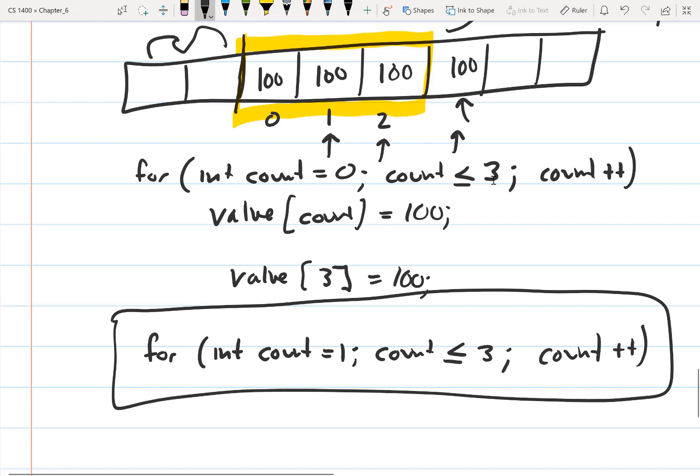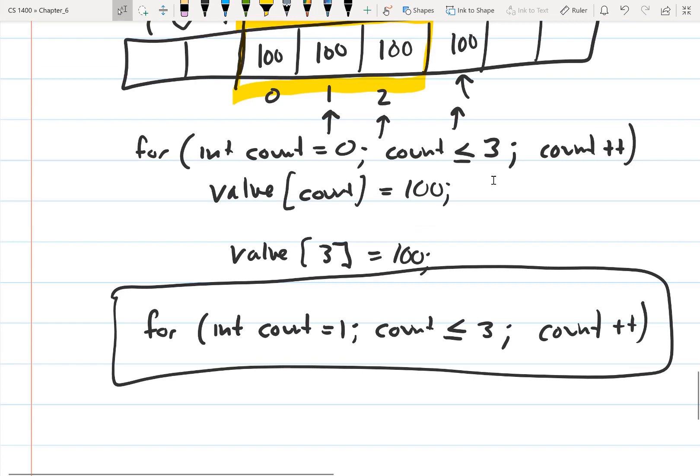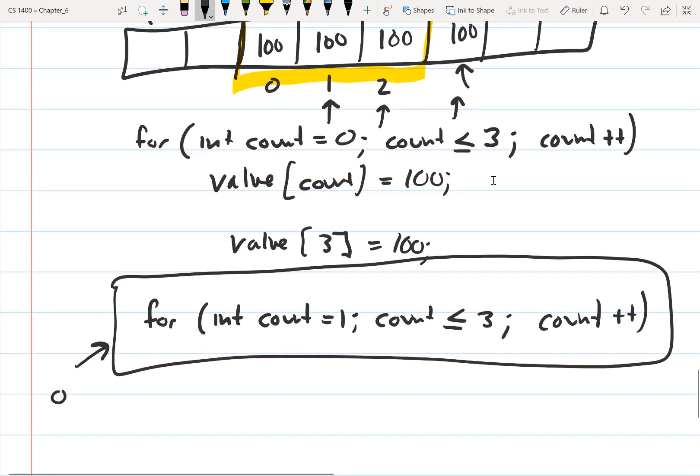Some programming languages protect you from doing that. They won't let you run off the array, but C++ doesn't protect you from that. In C++, you can run off your arrays. And this error right here is called an off-by-one error. It's so common it has a name.